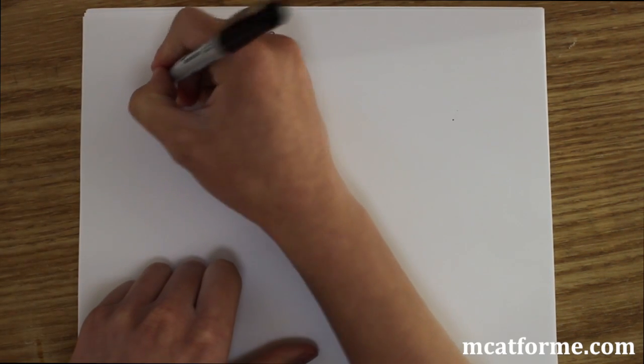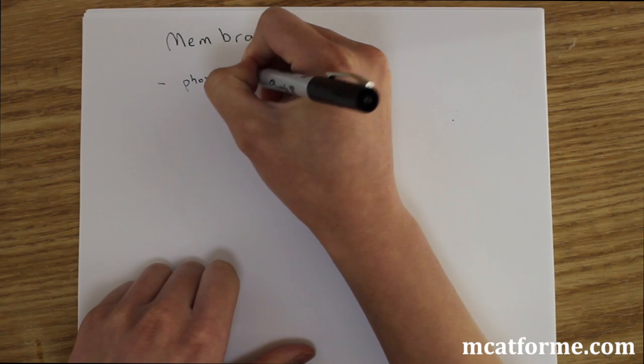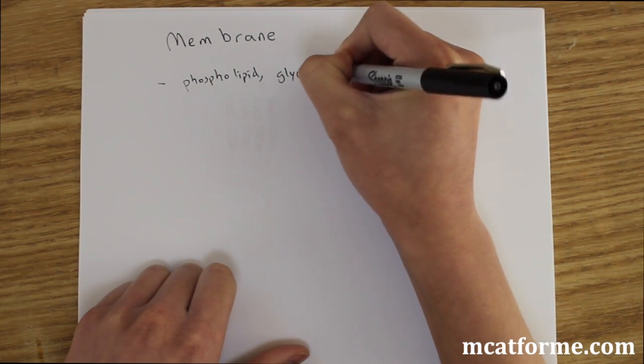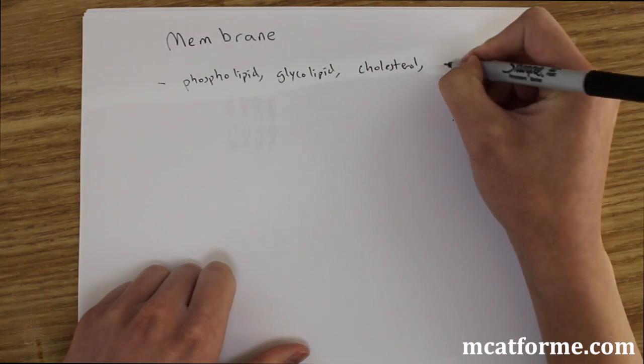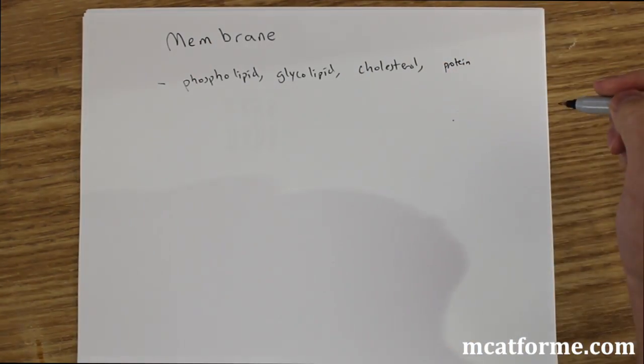So plasma membranes are made up of phospholipids, glycolipids, and cholesterol. They also have proteins integrated with them and we'll see that later. But the main components are those first three.